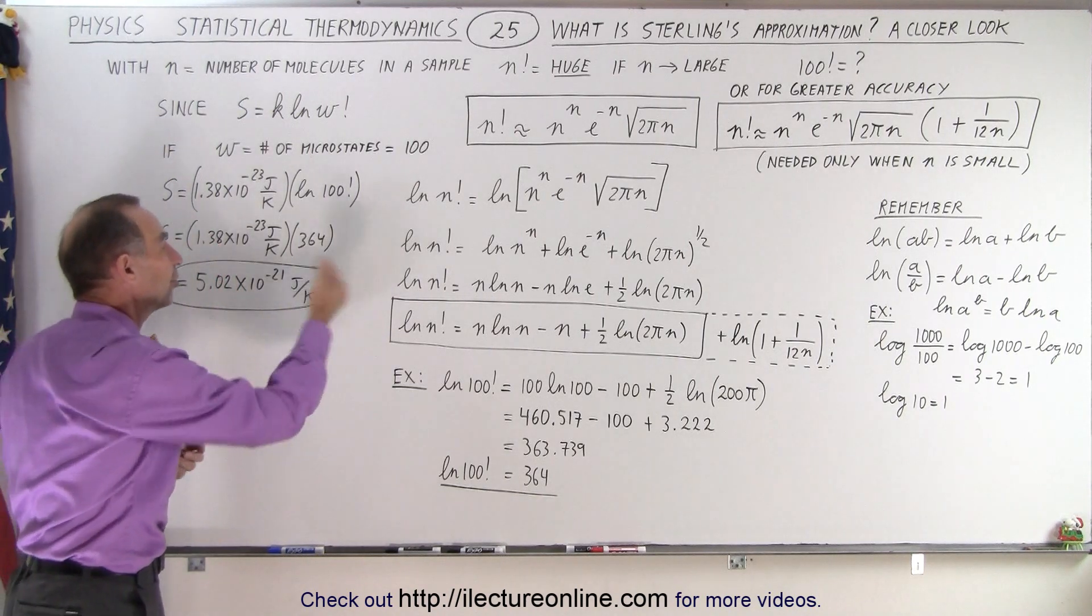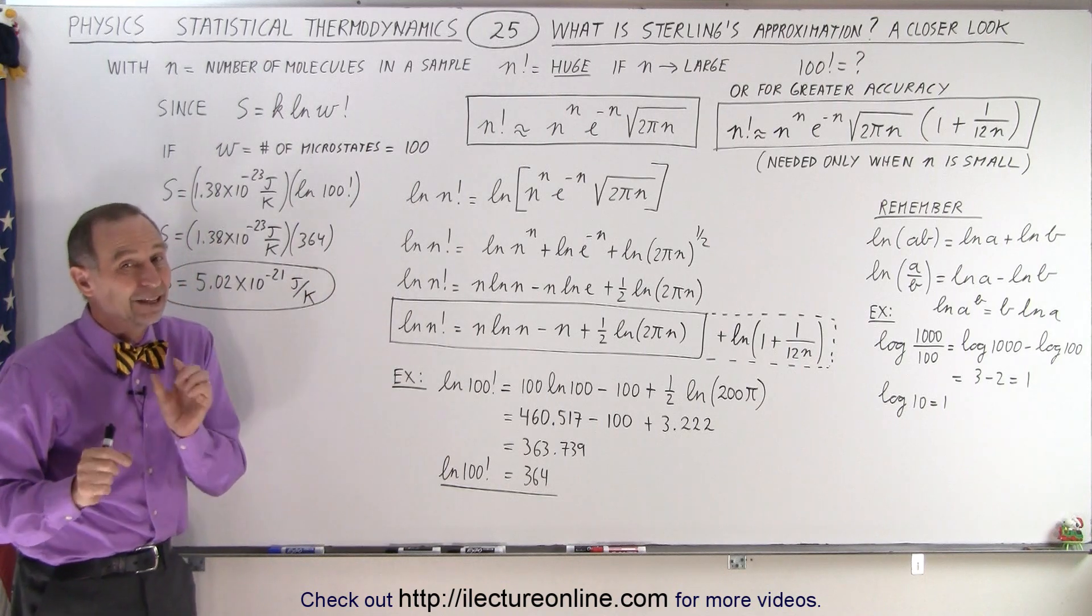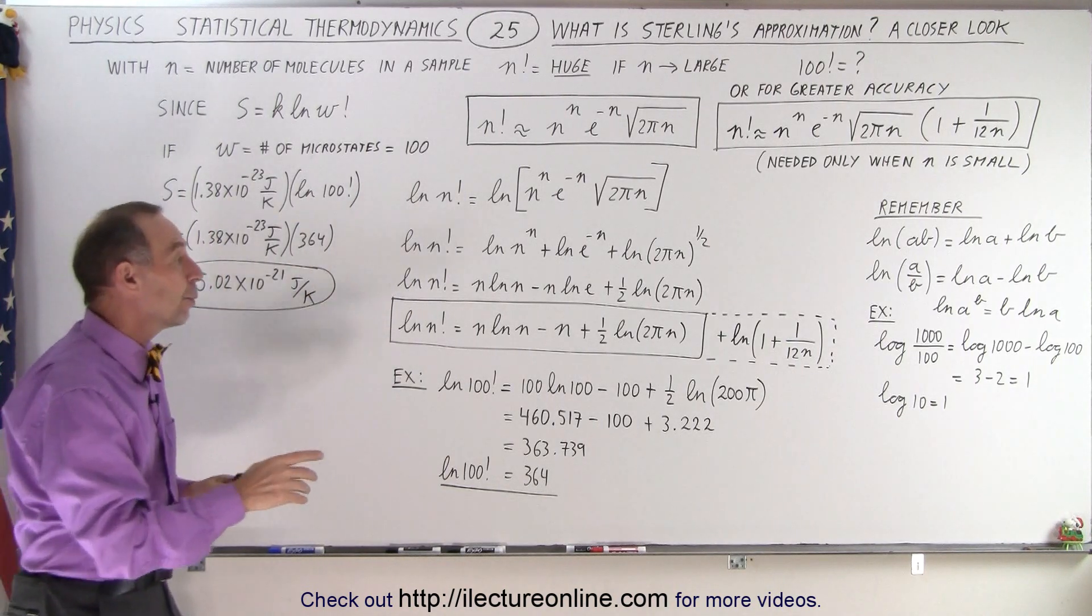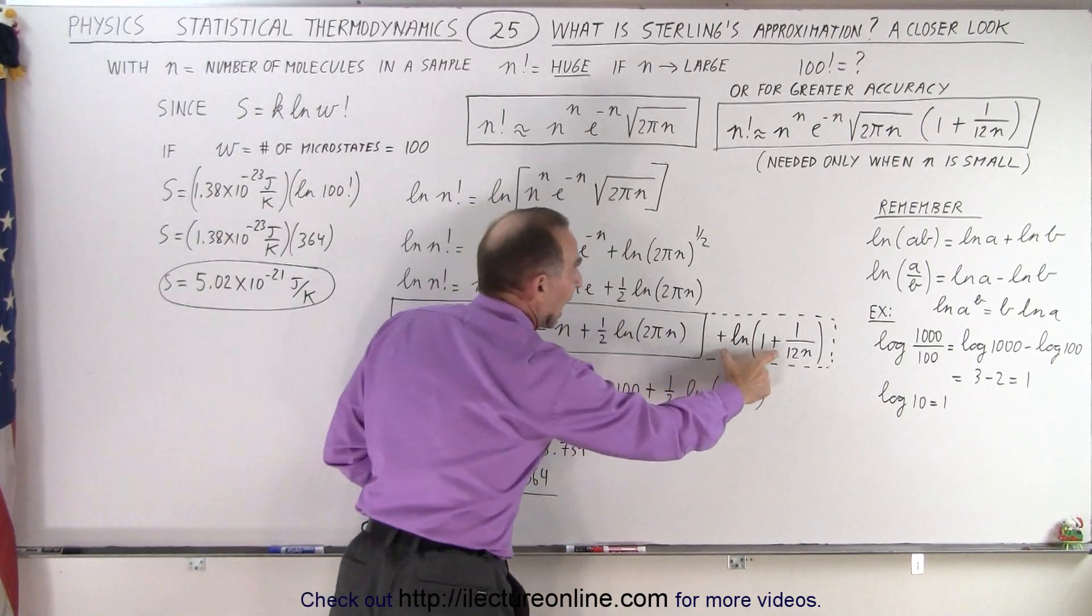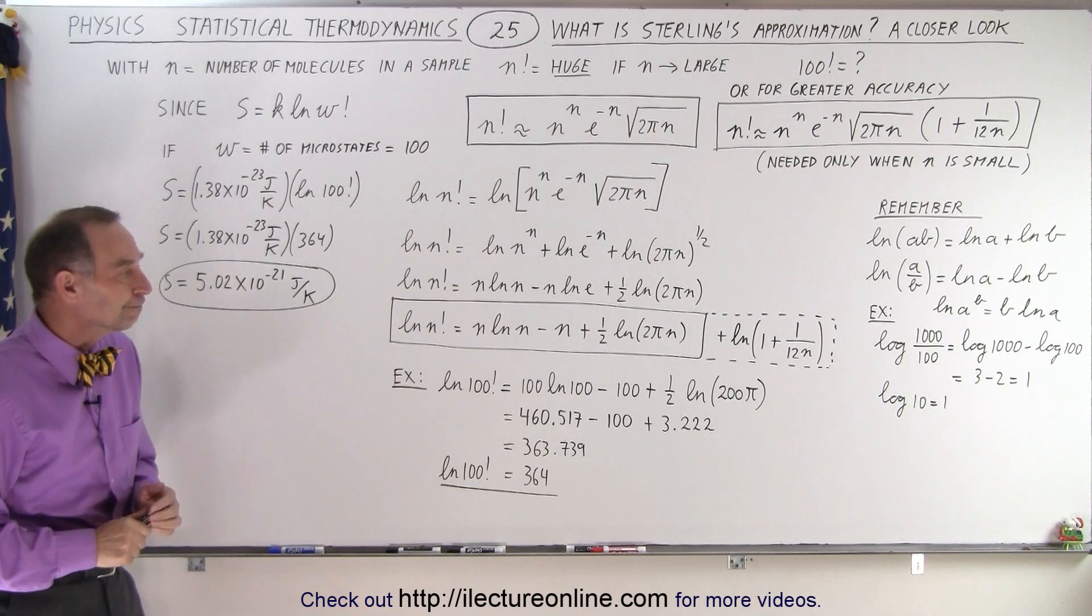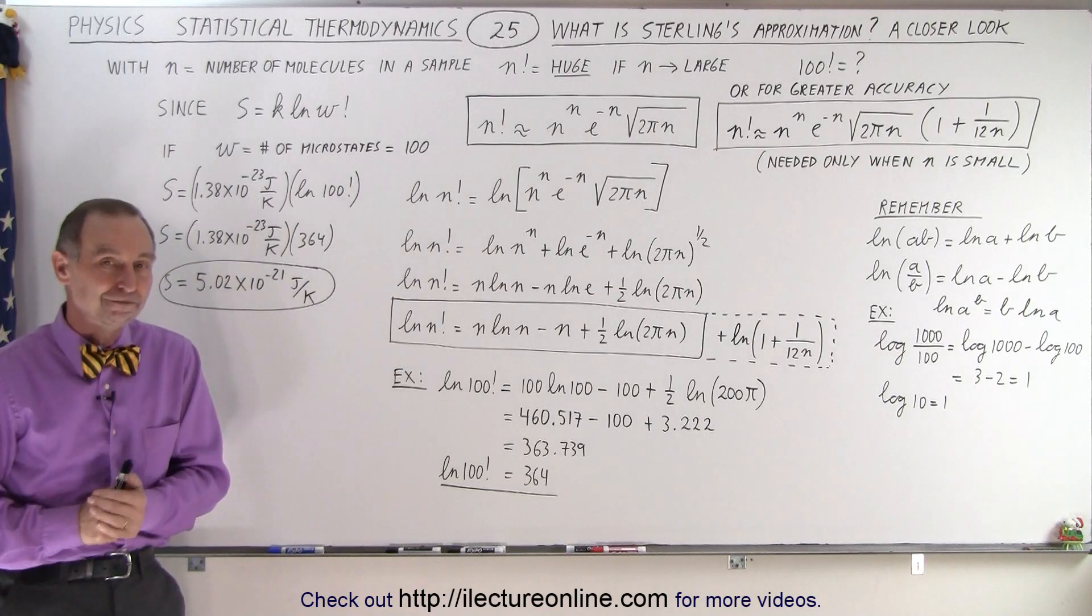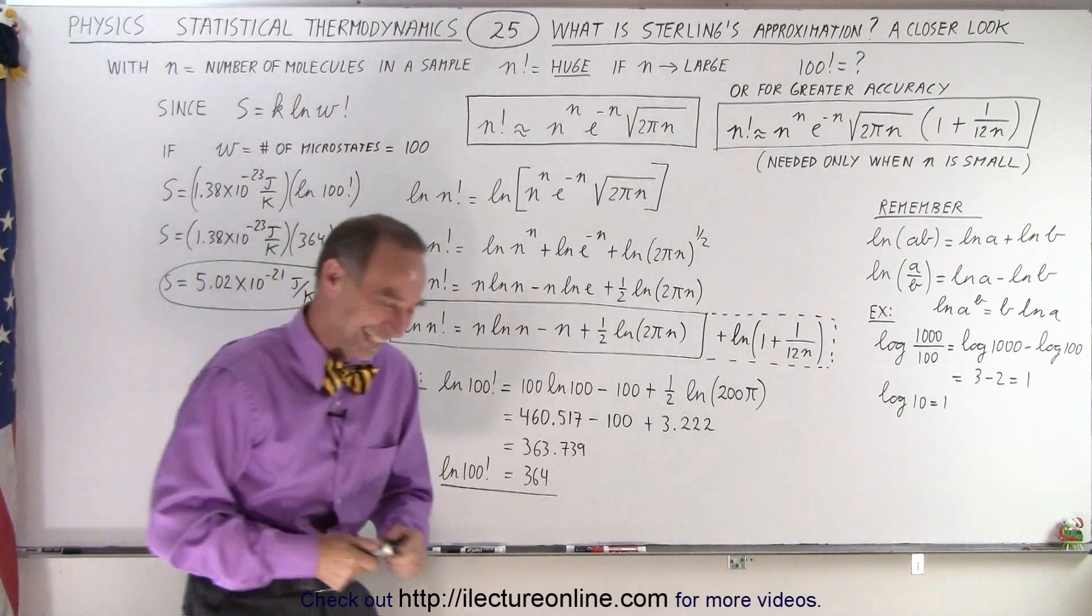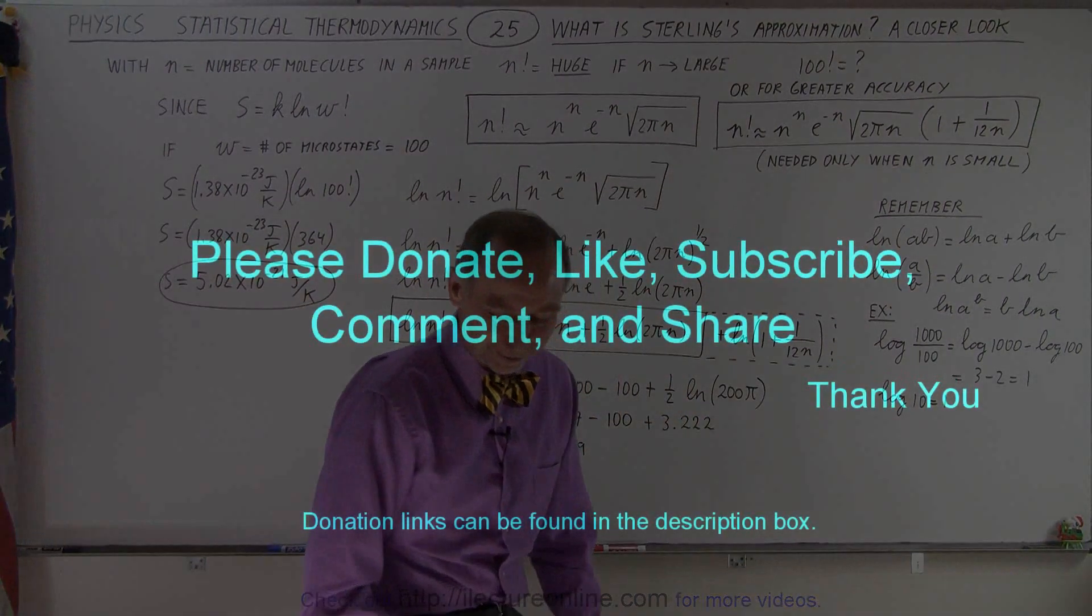Notice much easier using Stirling's approximation. If the number of microstates is small then you probably want to go ahead and make sure you add this additional term, but otherwise you don't need it and you can do without it. And that is how it's done, thank you.